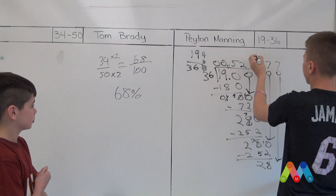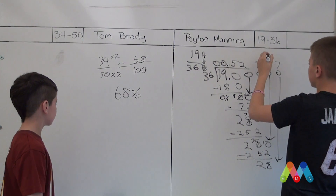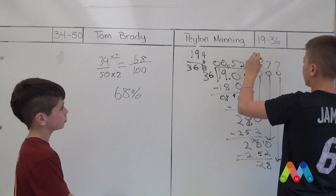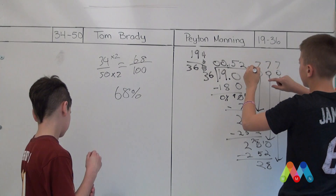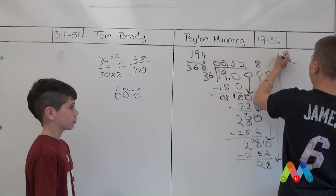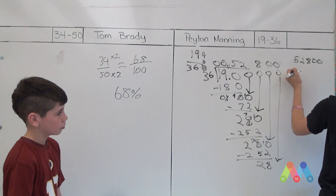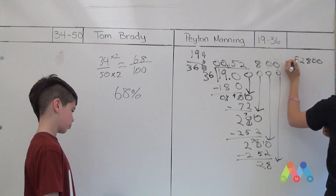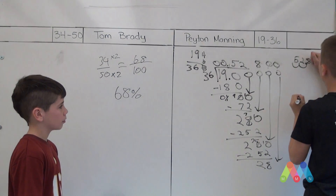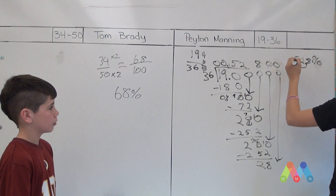Since it's repeating, we'll have to round to the nearest thousandth. Since the ten-thousandths digit is a 7, we'll round the 7 here to an 8, and these will be changed to zeros. So Peyton Manning's pass completion percentage would be 52.8%, because percent is out of 100.